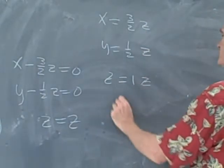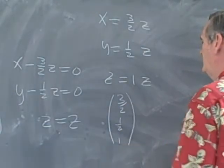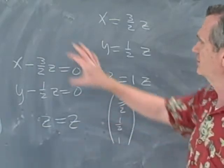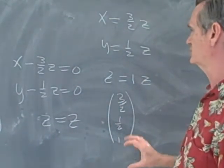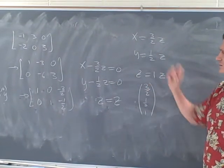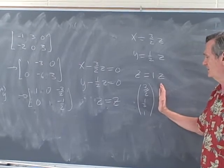And so the vector (3 halves, 1 half, 1) is in the null space of the linear map that's described by that matrix. In other words, any multiple of this vector will map to 0 under this matrix. And what I want to do is I want to go back to the picture, and I want to see why that's true.